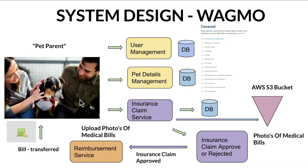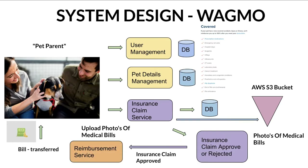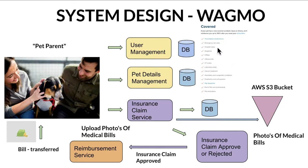Let's look at a small use case. A pet parent who has a dog registers to the Wagmo insurance platform and their account gets activated. Unfortunately the pet gets some health issues, so they go to the veterinary doctor, get treatment, and the pet recovers. They get bills from the hospital, log into the Wagmo application, upload the bills, and describe what happened. The insurance claim service takes these medical bills, persists them, and processes them — checking whether the treatment is covered under the insurance or not.